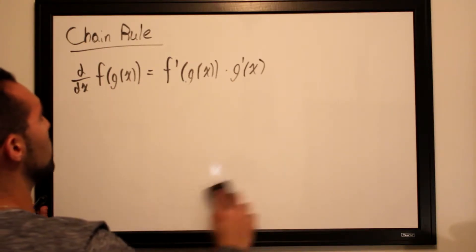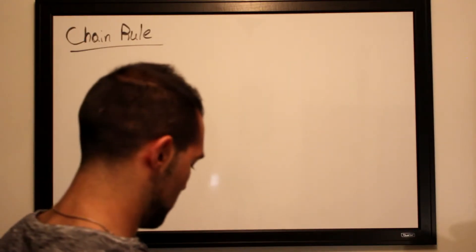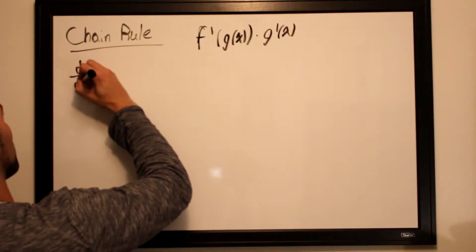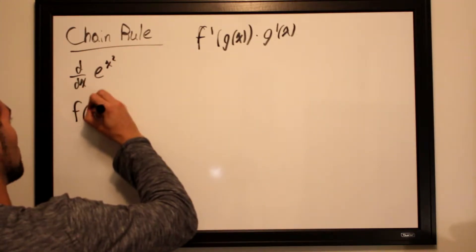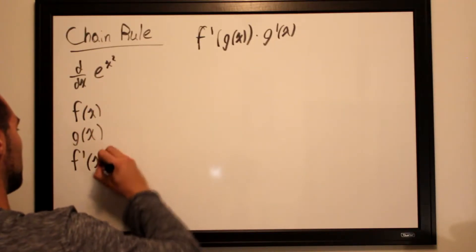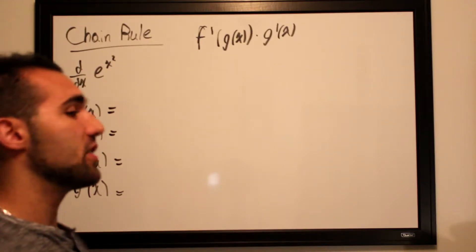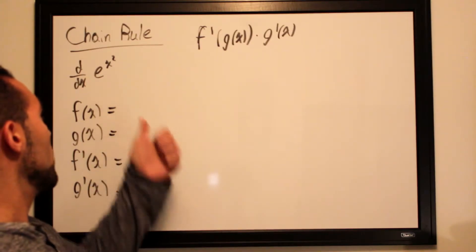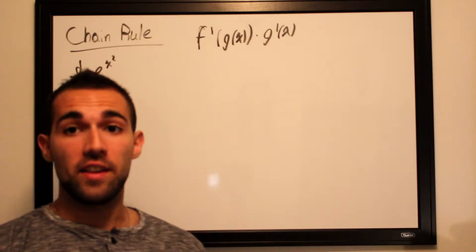Say we wanted to evaluate the derivative of e to the x squared. We split this up into f, g, f', and g'. We need to look at this as a composition of two functions we can easily differentiate. We can view x² as trapped within an e^x function, so we set e^x as our outer function and x² as our inner function.